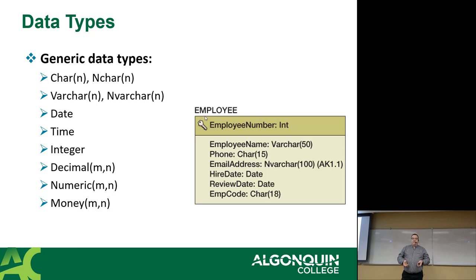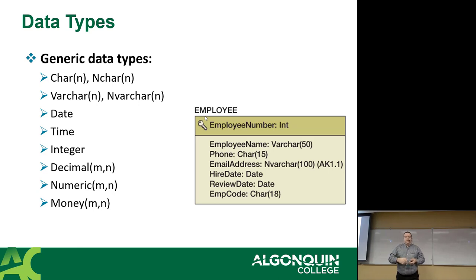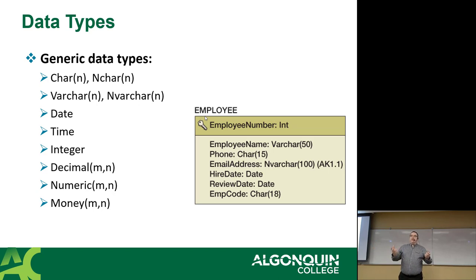However, space was limited and some clever people came up with something called varchar, also known as a varying character or variable character length field. So if you go varchar(5), that means it will hold up to five characters, but it will only occupy the amount of space for the number of characters in it, plus a magic set of bytes — a marker that says the field ends here. So varchar(10) holding 'abc' occupies 'abc' plus a couple of bytes. But if you try to put in more than 10 characters, depending on the database server, it'll either give you an error, or what MySQL will do is just truncate it — cut it off without even telling you.